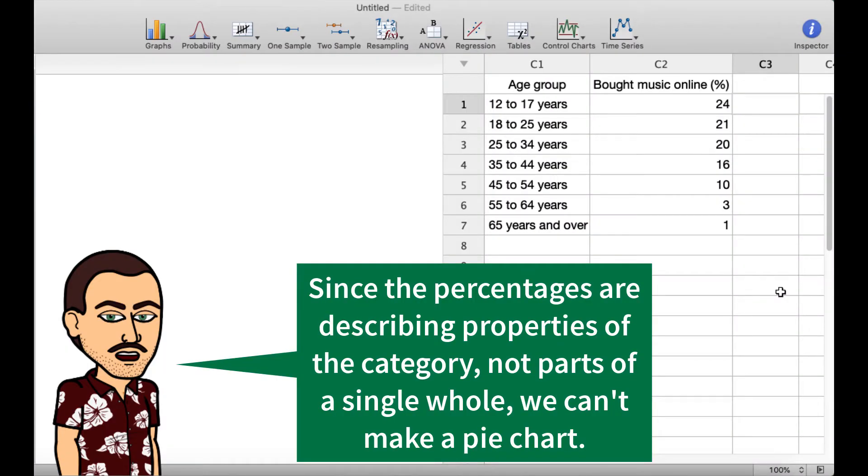So in order to explain why we don't want to use a pie chart to display these data, let's take a look at what the data represents. It says that of the 12 to 17 year olds, 24% of them bought music online. And similarly, 21% of 18 to 25 year olds and so on.